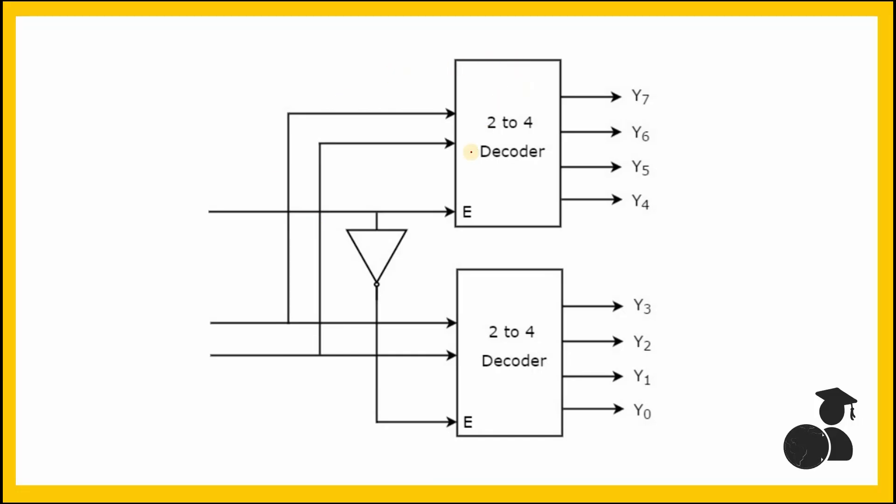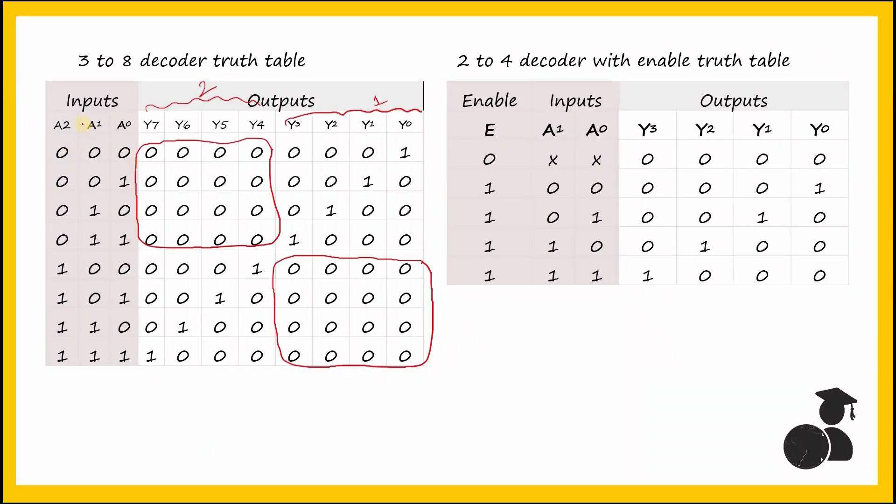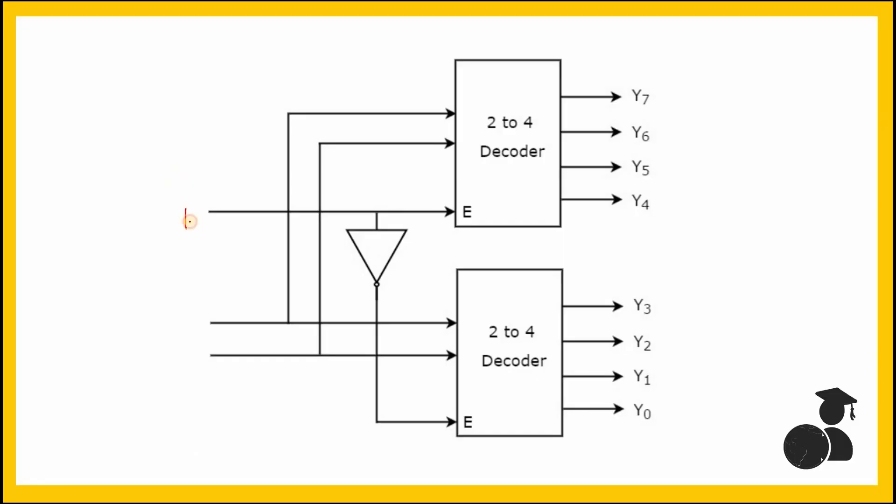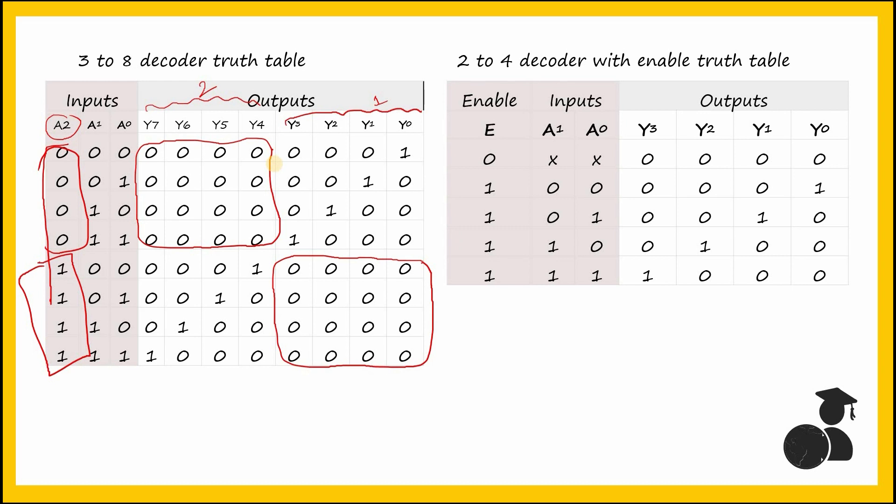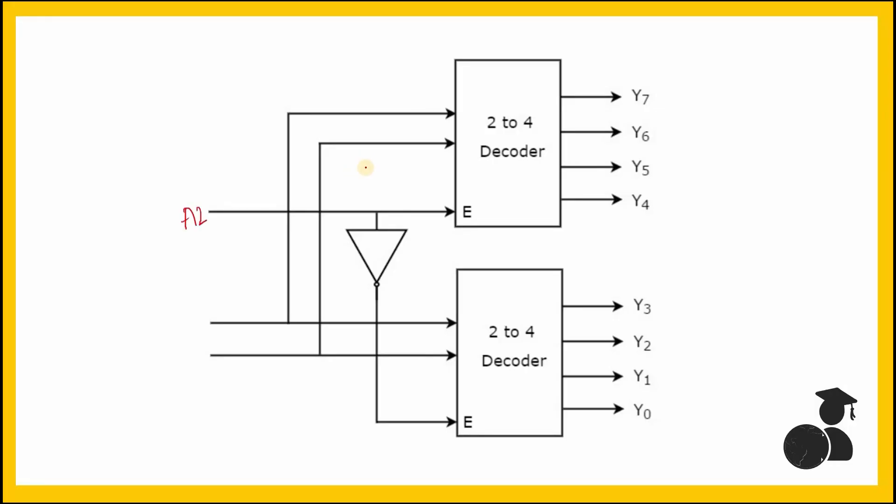So the circuit will be as follows, and you can note that A2 will determine which to enable and which to disable. So the A2, which is MSB, is 0 for first four iterations and then it becomes 1. So if we set A2 to both of the decoders' enable, when it is 0 it enables your Y0 to Y3 decoder while the Y4 to Y7 is disabled. So when it is 0, this becomes 1 and this is enabled. This remains 0 and this is disabled.